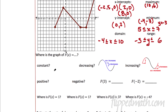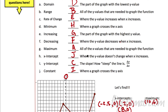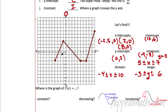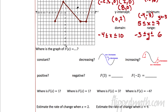Where is the graph constant? Constant is where the y value doesn't change when x increases. When we talk about x increasing, that means as we're traveling right on this graph — we're walking to the right, kind of like Mario in Mario Brothers. Where does the graph not change? It's between 5 and 7. So I'm going to write from 5 to 7, the graph is constant. It's that simple.